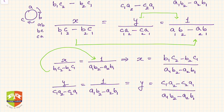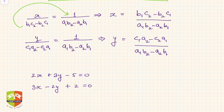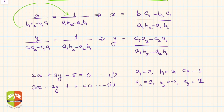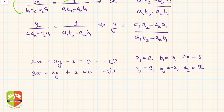If you remember these formulas and have all the values of a1, b1, c1 and a2, b2, c2, you can plug them in directly. Let's take an example: equation one is 2x + 3y − 5 = 0 and equation two is 3x − 2y + 2 = 0. So: a1 = 2, b1 = 3, c1 = −5 (note the sign!), a2 = 3, b2 = −2, c2 = 2.